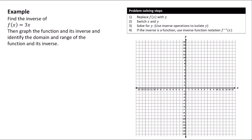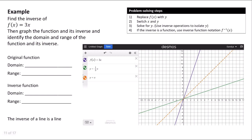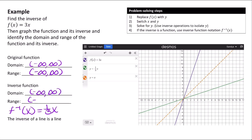Now let's find the inverse of f(x) = 3x. Same strategy: replace f(x) with y to get y = 3x, then switch x and y to get x = 3y. To get y by itself, divide both sides by 3 — since x has a coefficient of 1, that becomes ⅓x = y. Graphing both in Desmos, they're both lines again, so the inverse is a function. We write it as f⁻¹(x) = ⅓x. The domain and range of the original function are negative infinity to positive infinity, and the inverse, also a line, has all real numbers in its domain and range as well.